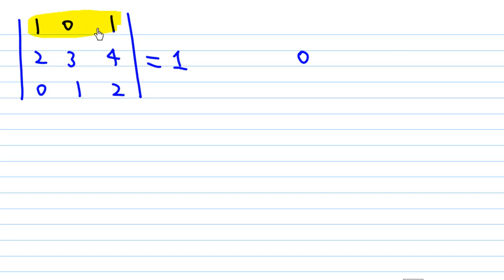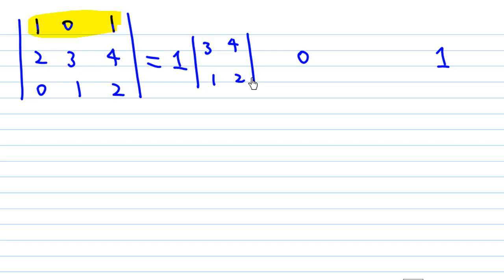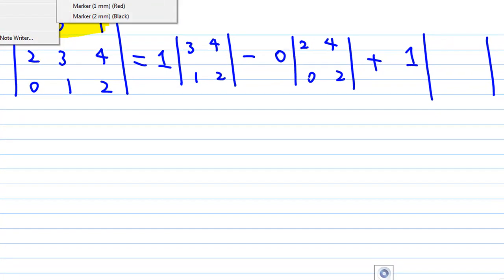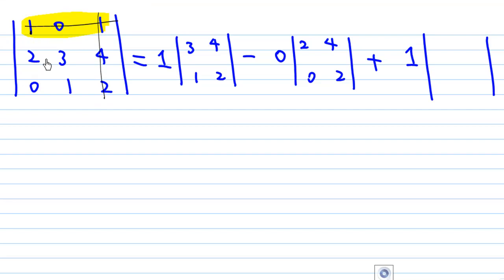For the first row, the entries are 1, 0, 1. I cross out the first row and first column, leaving [3, 4; 1, 2], and write a 2 by 2 determinant associated with the first-row, first-column element 1. Then minus 0 times the determinant from crossing out first row, second column, leaving [2, 4; 0, 2]. Then plus 1 times the determinant from crossing out first row, third column, leaving [2, 3; 0, 1].